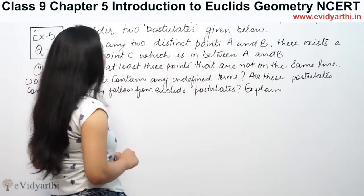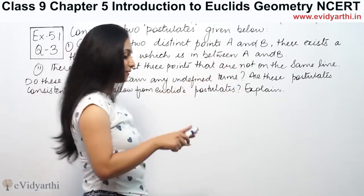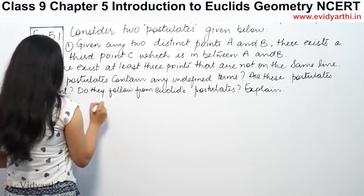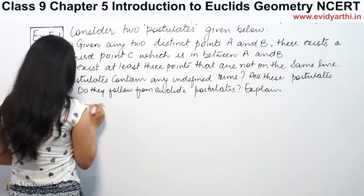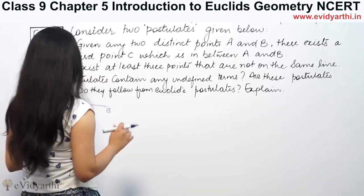This says, consider two postulates given below. Number 1, given any two distinct points A and B, I have two points here. A and B, there exists a third point C which is in between them.